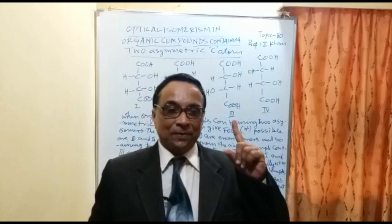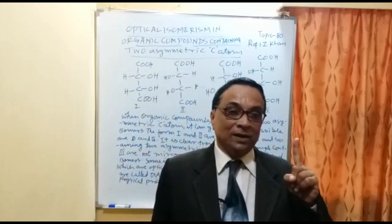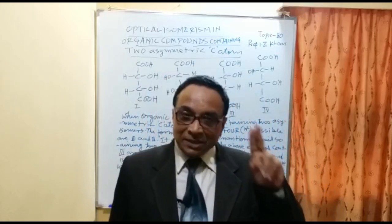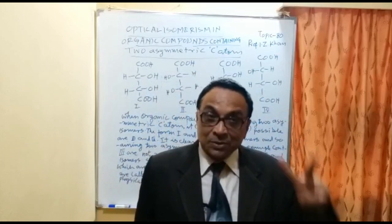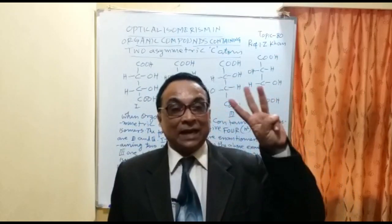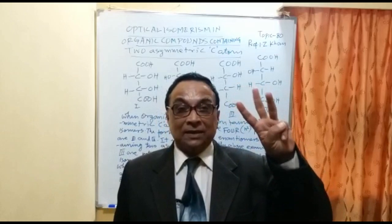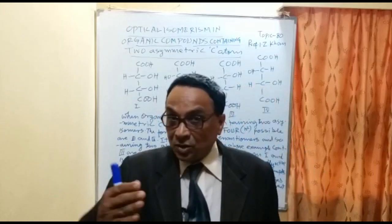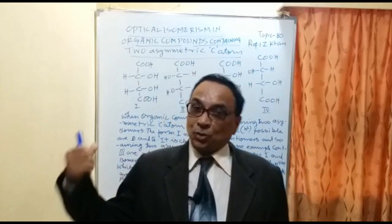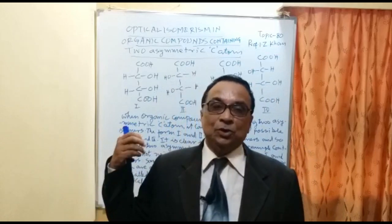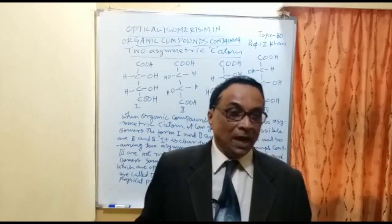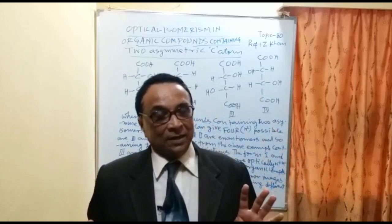If the number of asymmetric carbon atoms is one, there will be two isomers. If asymmetric carbon atoms are two, there will be four isomers. If asymmetric carbon atoms are three, then there will be six isomers — it multiplies like that. Here I have shown four isomeric forms, labeled one, two, three, and four.